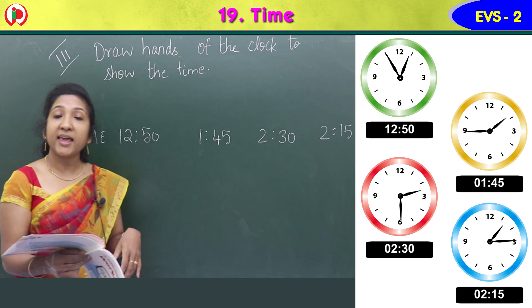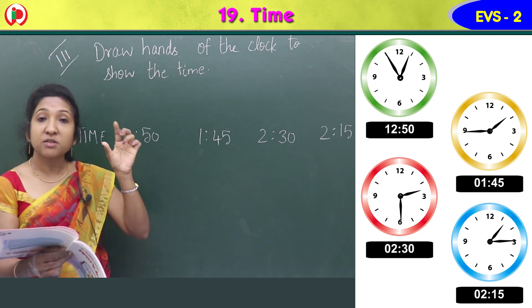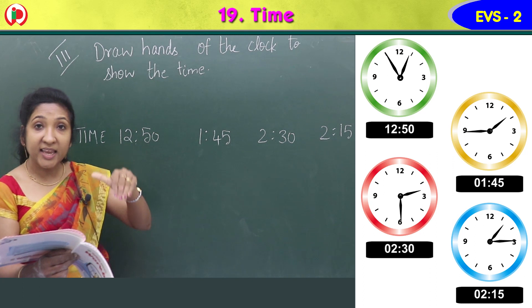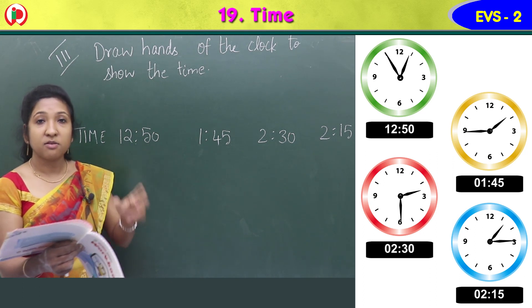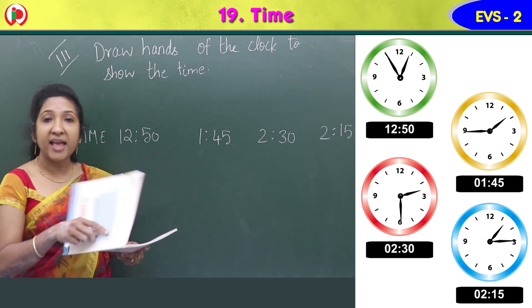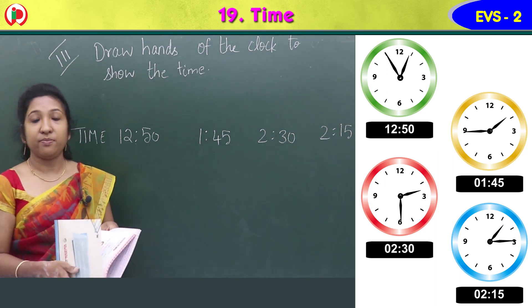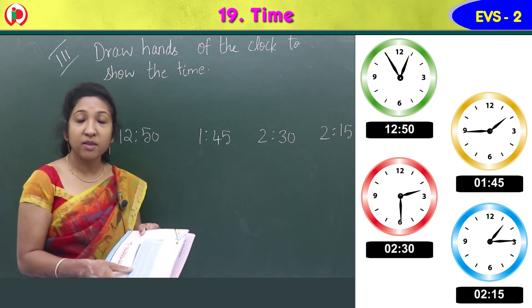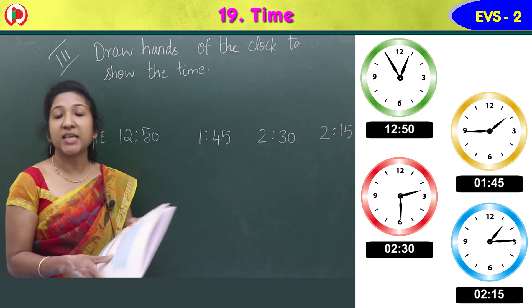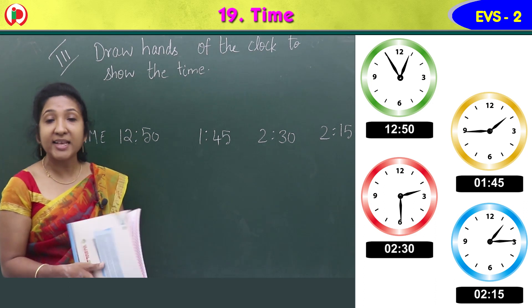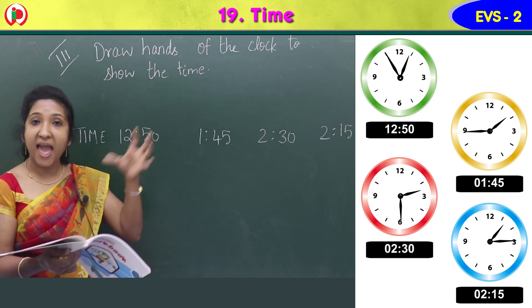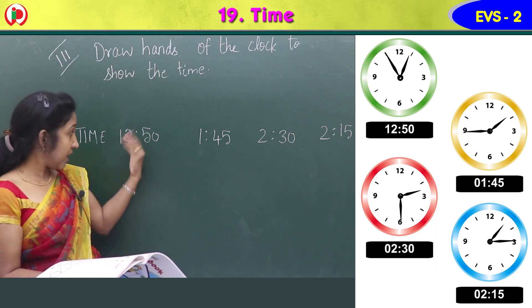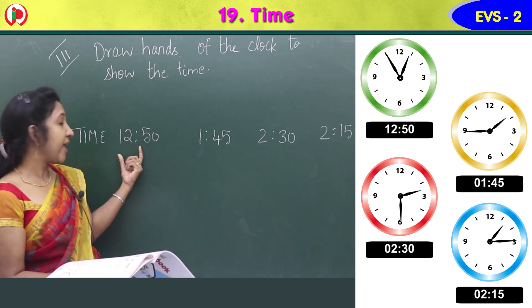The last one is 2:15. The hour hand is again at 2, and 15 means the minute hand will be at 3. If you know how to read the time and calculate, you can easily draw the hands of the clock according to the timings given.